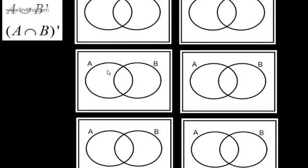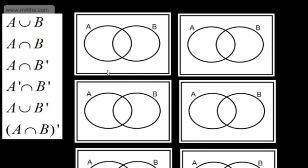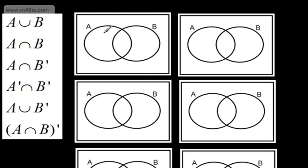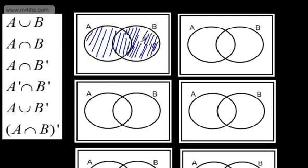We're now going to move on to shading Venn diagrams and look at the notation. A union B means either A or B or both. So if we want to shade A union B, we shade both circles — it can be A, or B, or A and B together. That's A union B.